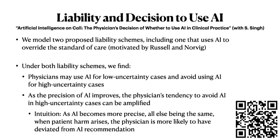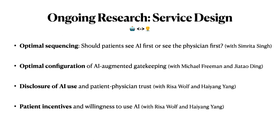Second, as AI precision improves, you'd expect everything to get better — but not necessarily. As AI gets better, the physician's tendency to avoid AI in high-uncertainty cases can actually be amplified. The intuition: as AI becomes more precise, when patient harm arises, the physician is more likely to have deviated from the AI recommendation, because a better AI is more likely to have told you the right answer. This could paradoxically prevent people from using AI even as it improves.